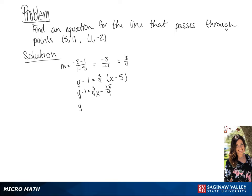We're going to change the 1 into 4 over 4 so that we have a common denominator and it makes it easier to add. And if we add 4 over 4 to both sides, we will get y equals 3 fourths x minus 11 over 4.